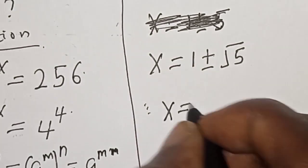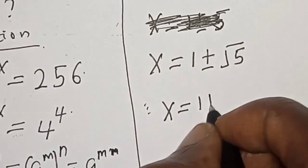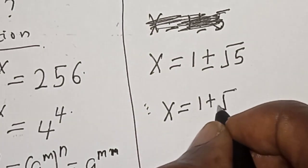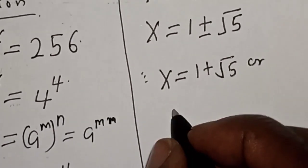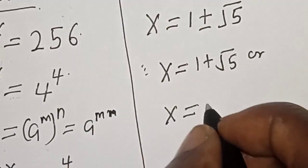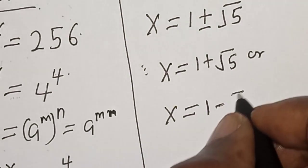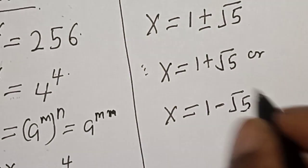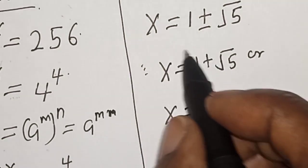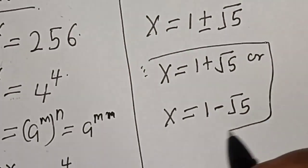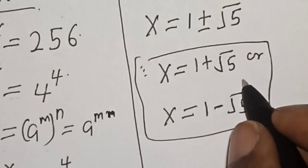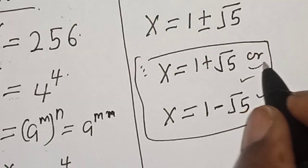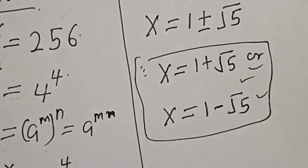Therefore, s equals 1 plus root 5, or s equals 1 minus root 5. That is our final answer. If you love the class, please like, share, comment and subscribe. Thank you.